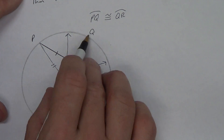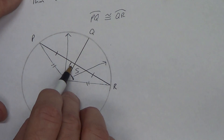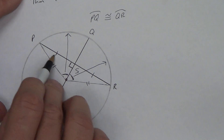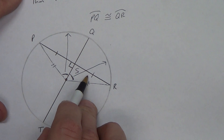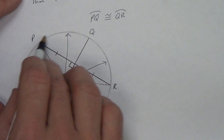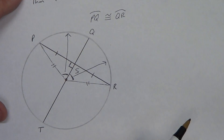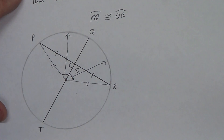So if you have a diameter that is perpendicular to a chord, then it bisects the chord — we already talked about that — and it also bisects the arc. That's theorem 10.5.